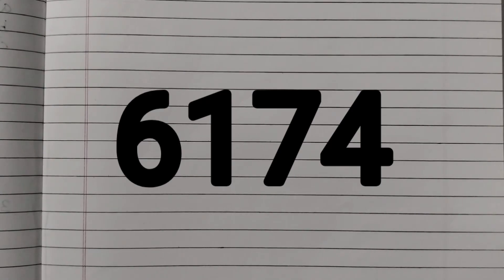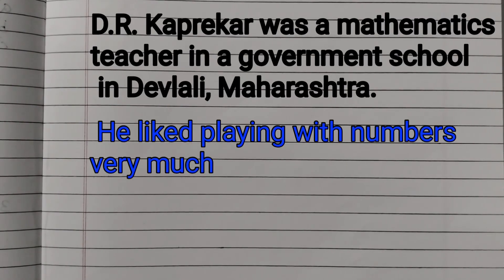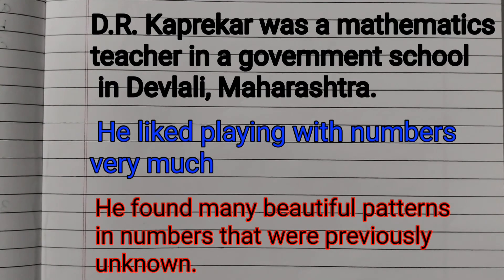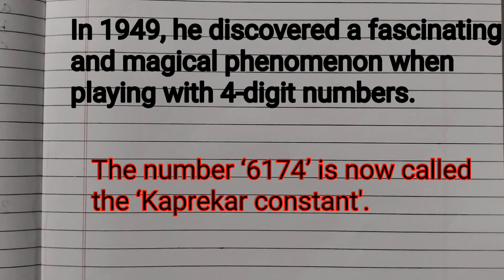This is for class 6 students from the new NCERT textbook Ganit Prakash, given on page number 62. The magic number is 6174. D.R. Kaprekar was a mathematics teacher in a government school in Devalali, Maharashtra. He liked playing with numbers very much and found many beautiful patterns in numbers that were previously unknown. In 1949, he discovered a fascinating and magical phenomenon when playing with 4 digit numbers. We need to follow a few steps to get this magic number 6174. This number is also called the Kaprekar constant.